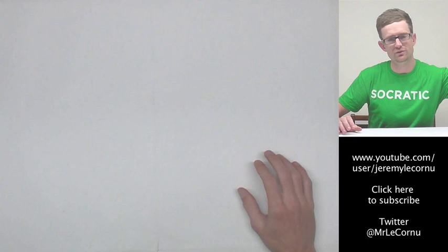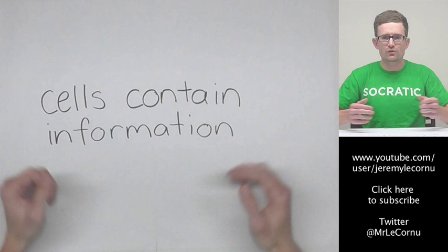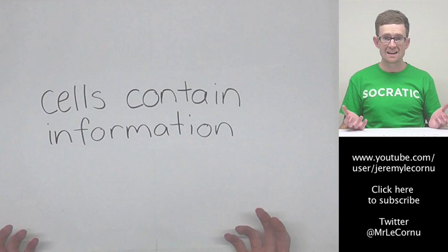Okay, so first of all we know that living things are made of cells, and you and I for example are made of trillions of cells. And the thing is, all cells contain information. Basically that information tells our cells how to do everything that they need to do.